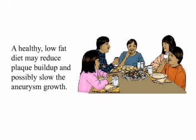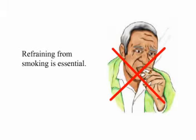Preventative Measures. A healthy, low-fat diet may reduce plaque buildup and possibly slow the aneurysm growth. Refraining from smoking is essential.